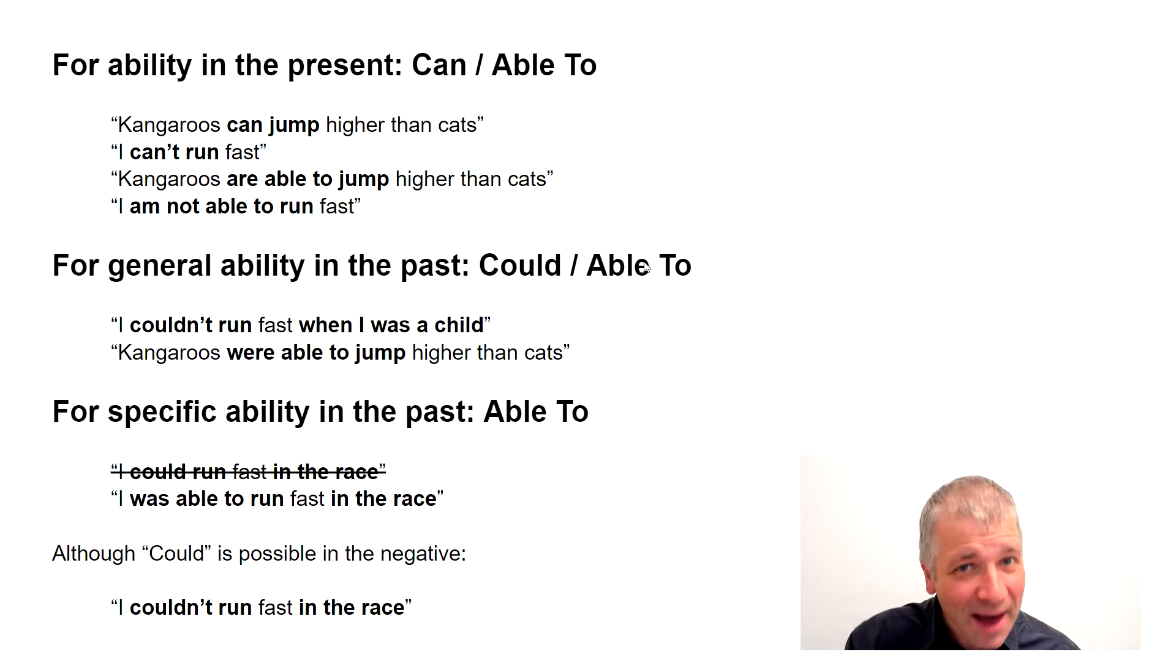So for ability now in the present, we can use can or able to. For example, kangaroos can jump higher than cats. I can't run fast. Or with able to, kangaroos are able to jump higher than cats, or I am not able to run fast.